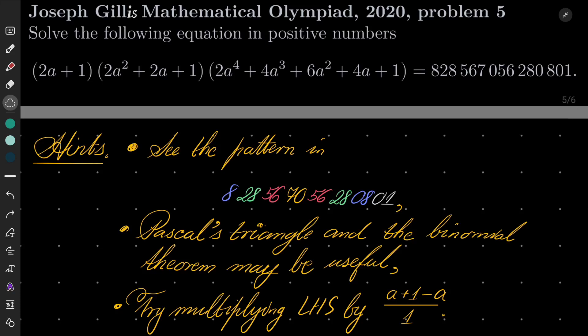Friends, in this video I'd like to solve the following problem from the Joseph Gillis Mathematical Olympiad 2020, problem number 5. Solve the following equation in positive numbers: (2a+1)(2a²+2a+1)(2a⁴+4a³+6a²+4a+1) = 828,567,056,280,801.